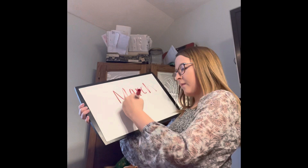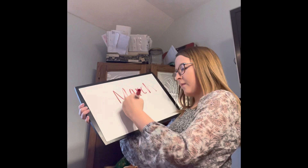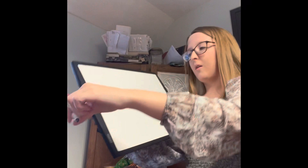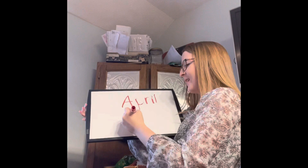March is capital M, a, r, period — Mar. Make sure you have that period in there to make an abbreviation. For April, it's going to be capital A, p, r, period — Apr.